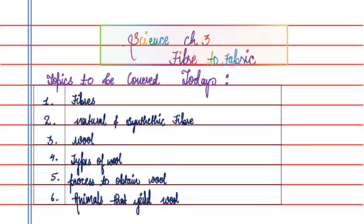Hello everyone, welcome back to NCRT channel. Today we are going to do the science of class 7, chapter 3: Fiber to Fabric. The main motive of this chapter is to study three topics.